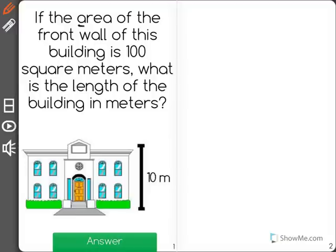If the area of the front wall of this building is 100 square meters, what is the length of the building in meters?